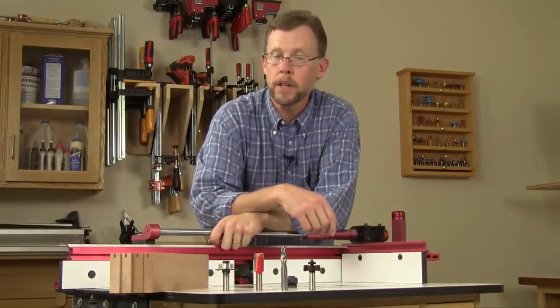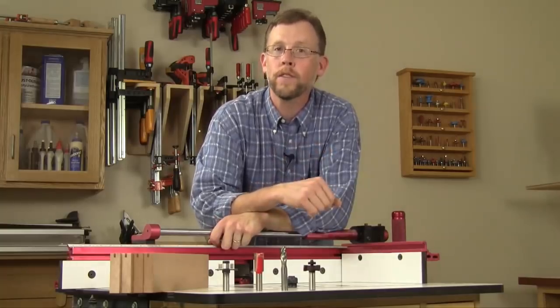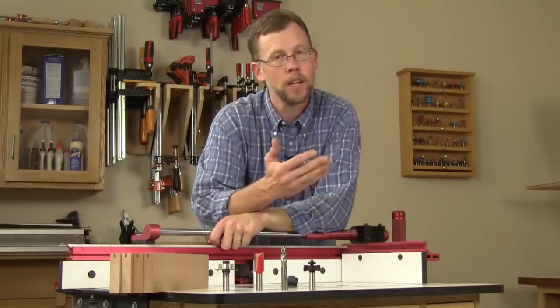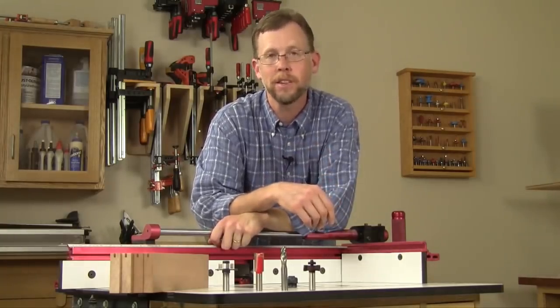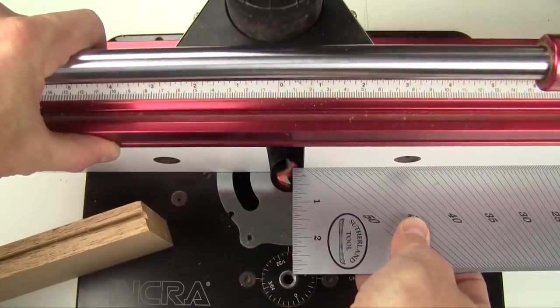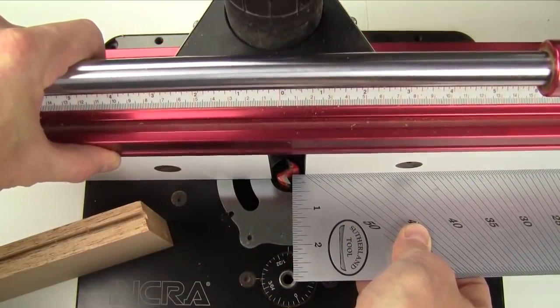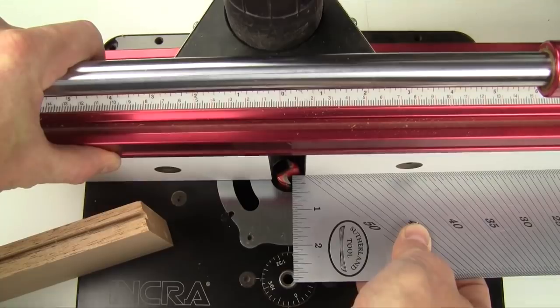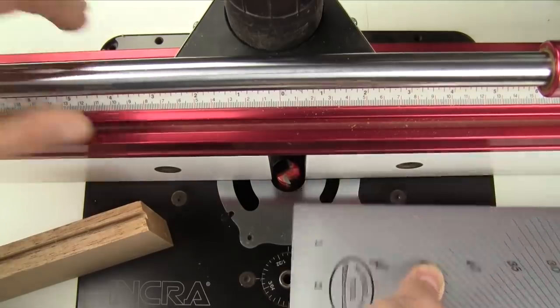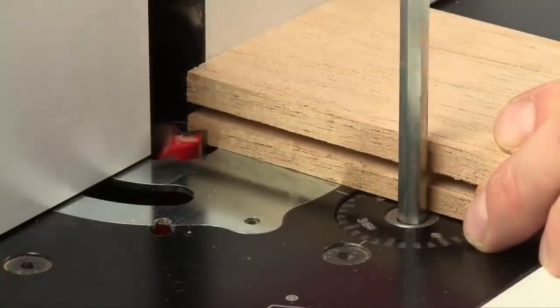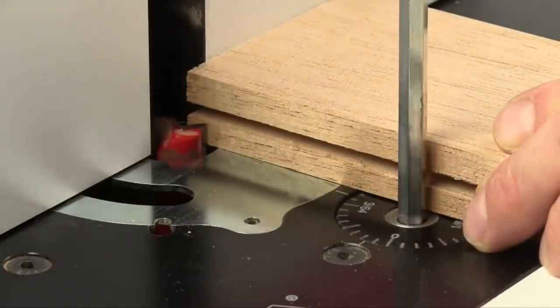What we'll do is set up the bit to cut the cheek and the shoulder of the tongue in one pass, and in two passes the tongues will be done. For an example, we'll use a standard 3/4 inch straight bit here. Bury the bit in the fence so just a quarter inch of the cutter projects out, and raise it until the top of the bit just kisses the groove.